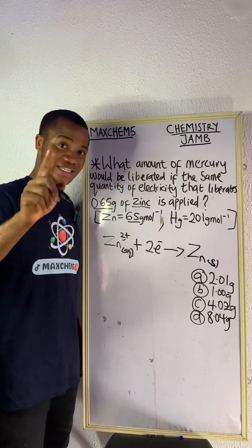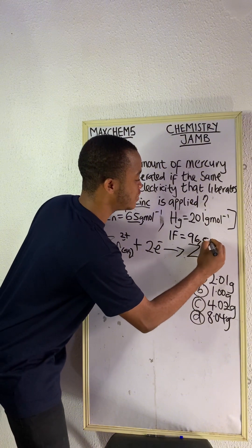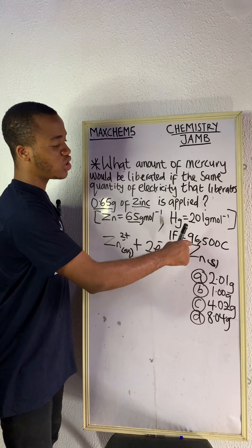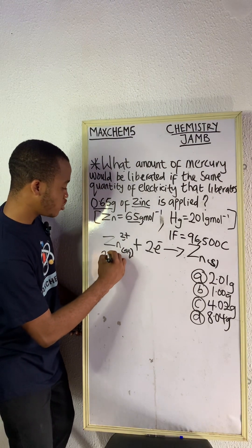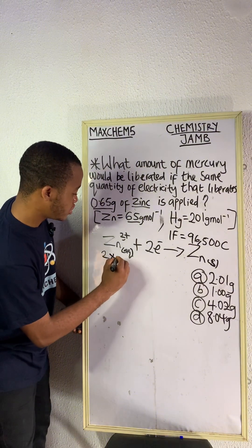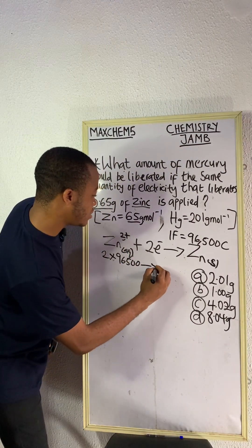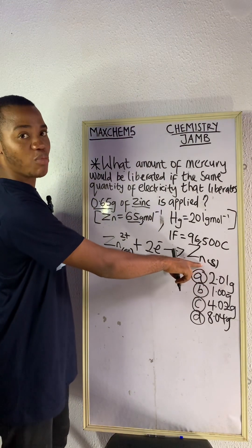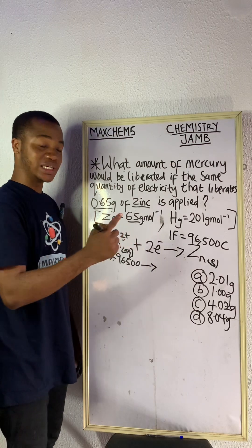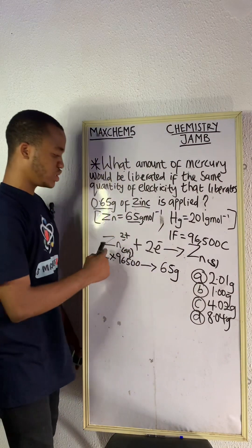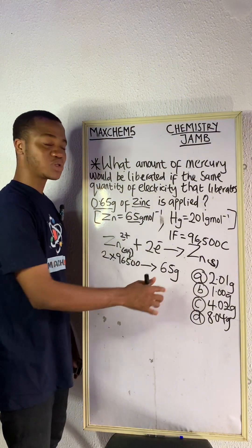Always know that one Farad is equal to 96,500 coulombs of electricity. Now we have two here — two Farads — so we are going to have 2F, or you can write 2 × 96,500. Two Farads liberates one mole of zinc, and one mole of zinc has a molar mass of 65 grams. So 2 × 96,500 coulombs liberates 65 grams of zinc according to this equation.